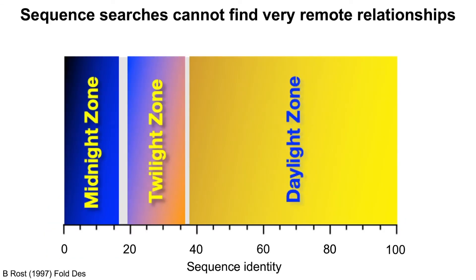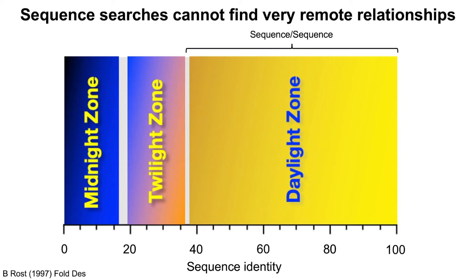Normally when we search, we search on the protein level doing sequence-sequence comparisons because we can do that really fast. There are different levels of difficulty in finding homology. On the x-axis you can see sequence identity. The first bucket is the daylight zone, which goes from 100% to below 40% sequence identity, and we can fairly confidently align proteins using purely amino acid sequences. The twilight zone is between 20% and 35% sequence identity, where we cannot use normal sequence-sequence comparisons anymore but instead need profiles.